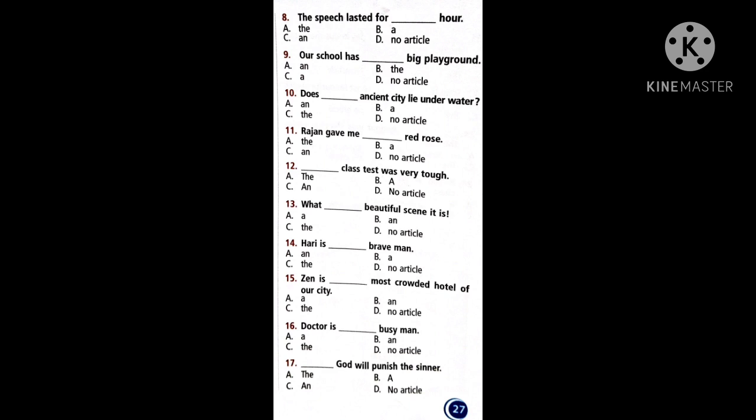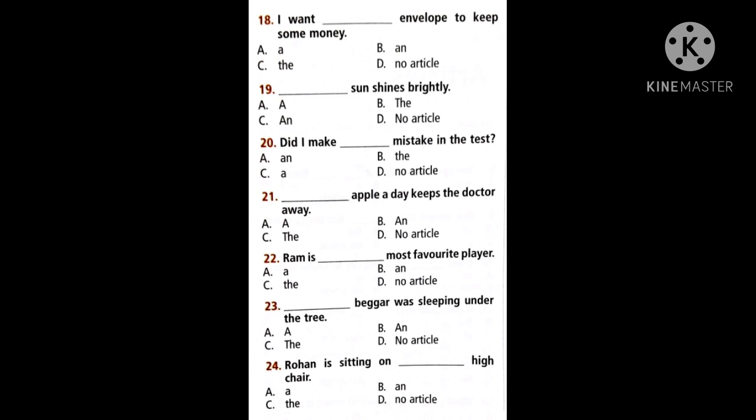Now if we come to question 18: I want dash envelope to keep some money. Which article do we use here? Dash sun shines brightly. So sometimes we want to use an article, sometimes we won't use.